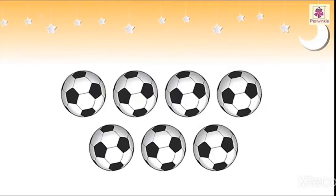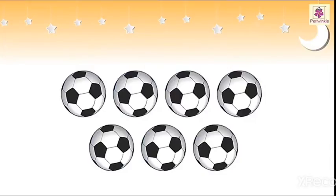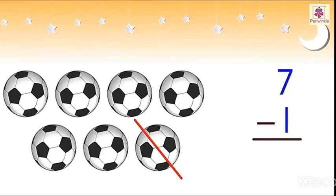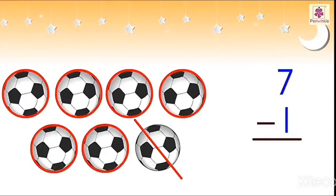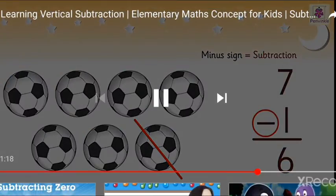For example, this is a group of 7 balls. Let's take away 1 ball. As we take away 1 ball, we need to subtract 1 from 7. The number of remaining balls is 6 — we are actually subtracting 1 from 7. That is, 7 minus 1 is equal to 6. The minus sign is a symbol used for subtraction and the answer is called the difference.